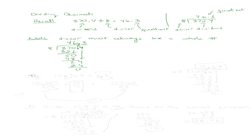Now let's try an example where the divisor is not necessarily a whole number. Let's try 10 and 764 thousandths divided by 2 and 3 tenths. Notice that our divisor is not a whole number, so we're going to make it one. To do that, we move the decimal point to the right as many times as needed. Here I need to move it to the right once, and I also need to move the dividend's decimal point to the right once. If you think of division as a fraction, moving the decimal point right is the same as multiplying by 10. Whatever I do to the denominator I must do to the numerator, so multiplying by 10 over 10 gives me 107 and 64 hundredths divided by 23.